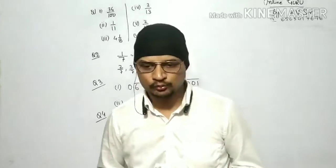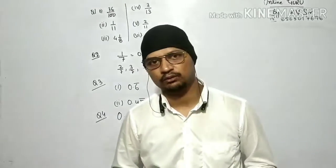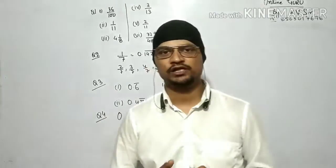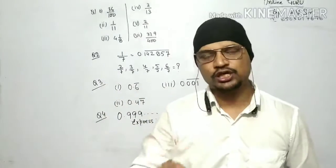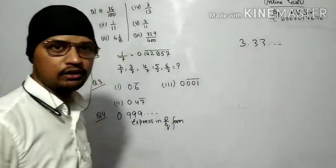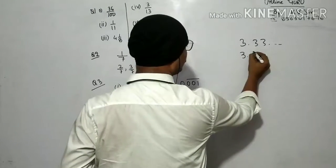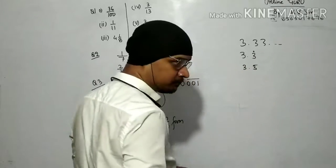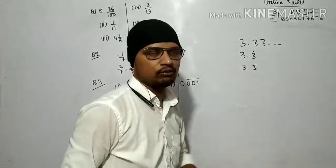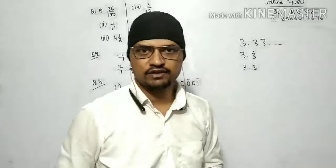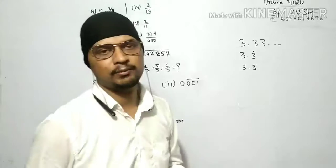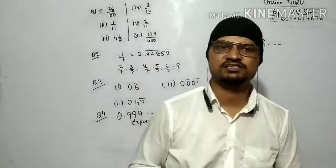This exercise is about recurring and terminating decimals. What is terminating? What is recurring? What is repetition? Suppose I have 10 upon 3. When we solve 10 upon 3, we get 3.33333 and so on. This is our recurring and non-terminating decimal. The number 3.333... is not terminating, and it is also recurring. So it is non-terminating and recurring.